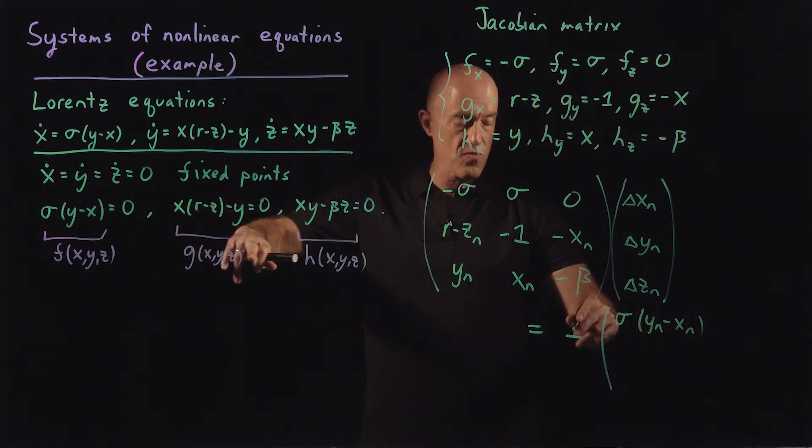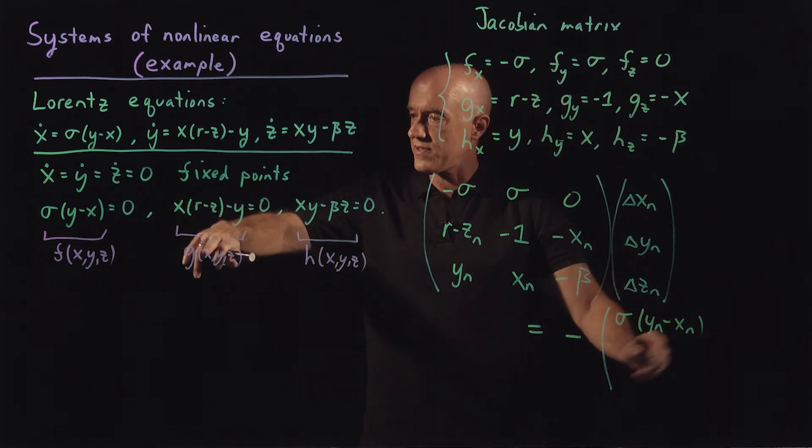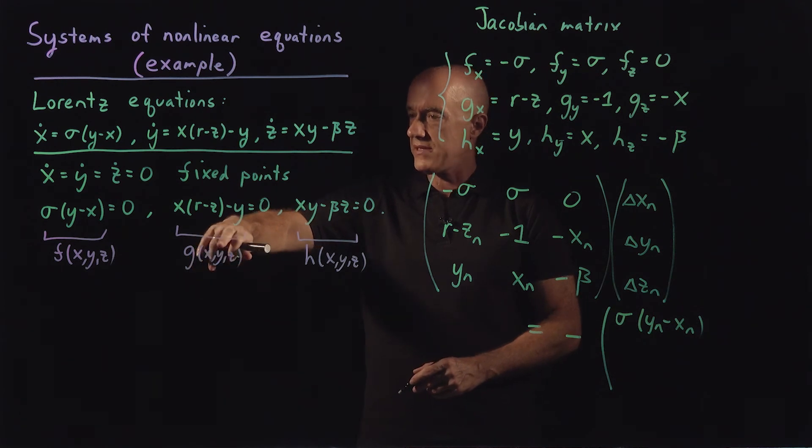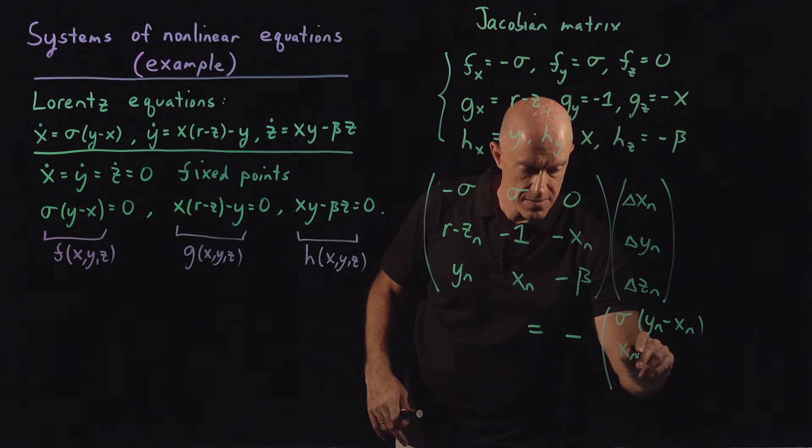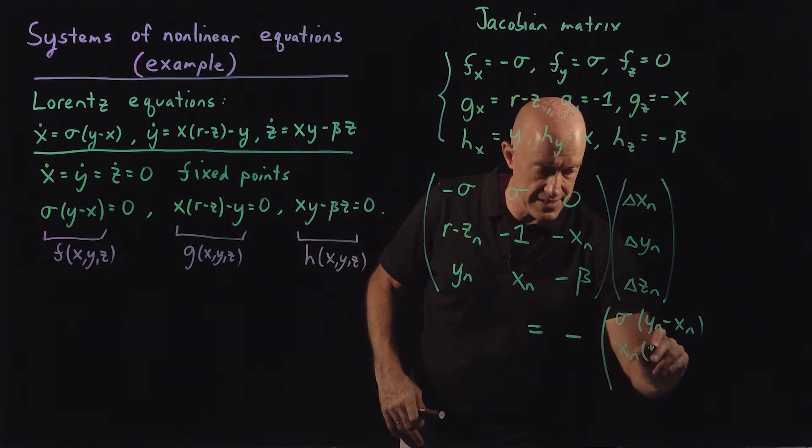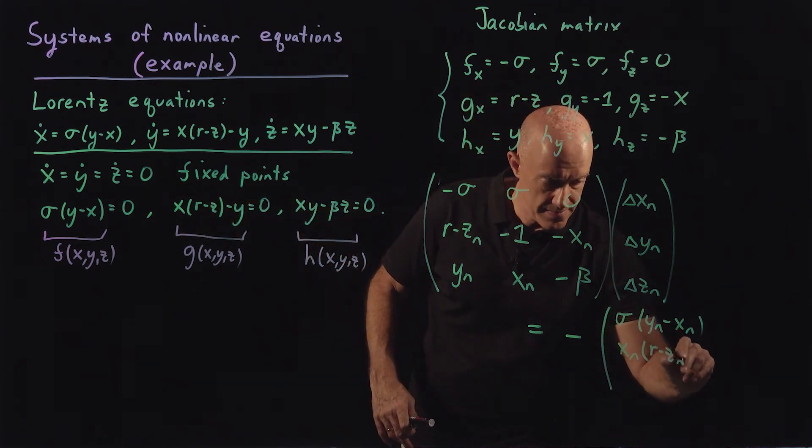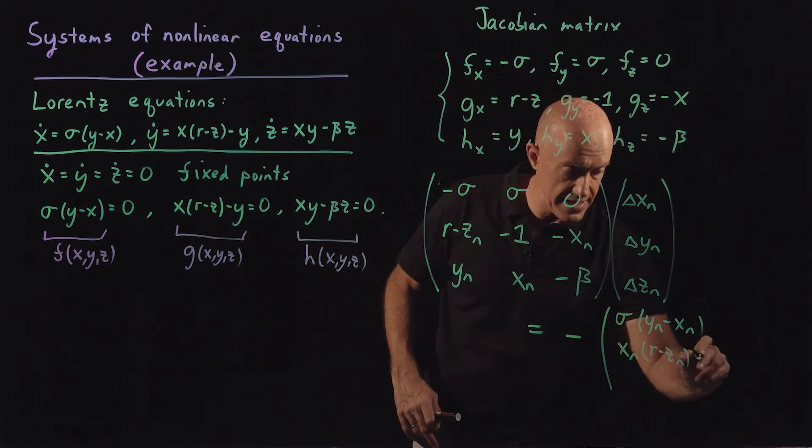The second row, the first, that's the first row, the second row will be g, so x_n(r minus z_n) minus y_n.